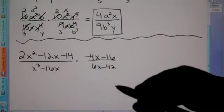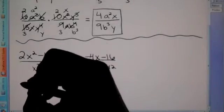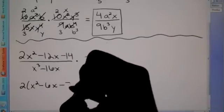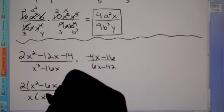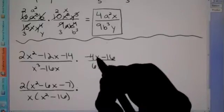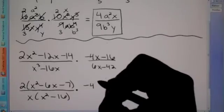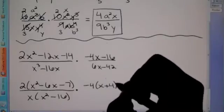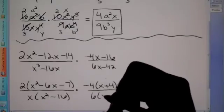From here, I ask myself: can I factor on the top? In this case I can — I can factor out a 2, which leaves me with X squared minus 6X minus 7. If I take an X out of the bottom, then up here on top I can factor out a negative 4, which leaves me with X plus 4. If I divide both terms by negative 4, I'm left with X plus 4. And on the bottom, I can factor out a 6, which leaves me with X minus 7.